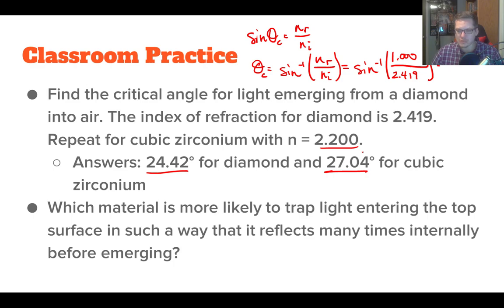The next question is, which material is more likely to trap light entering the top surface in such a way that it reflects many times internally before emerging? I would say that the one that has the less critical angle would be the most likely to bounce it around internally. That would be the diamond, the 24.42, because it doesn't have to be as much of an extreme. Using this critical angle is one way that jewelers are able to determine whether something's a diamond or cubic zirconium.